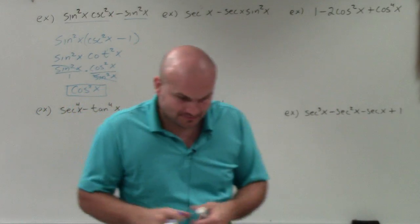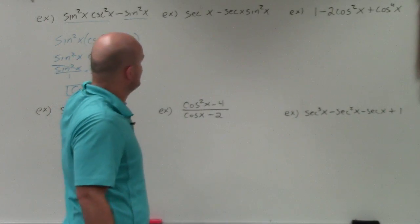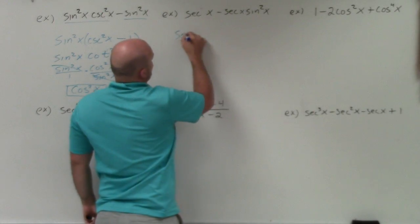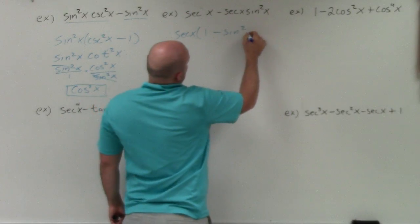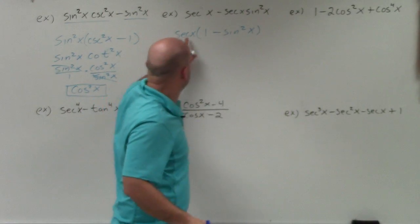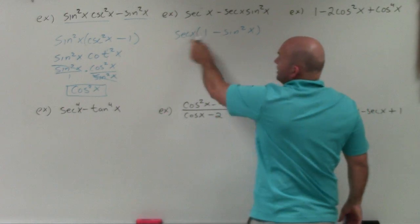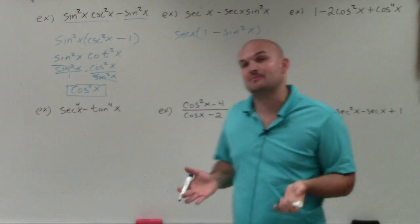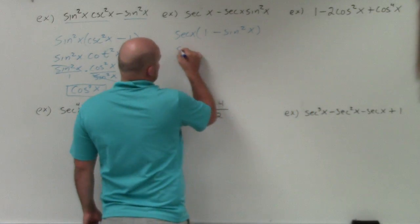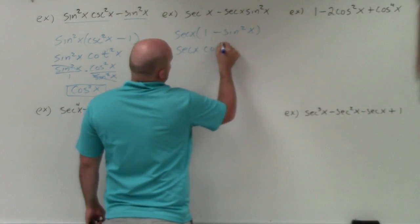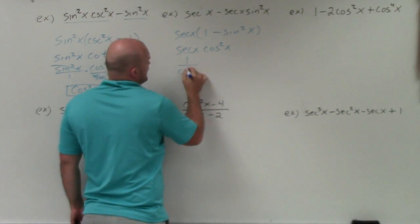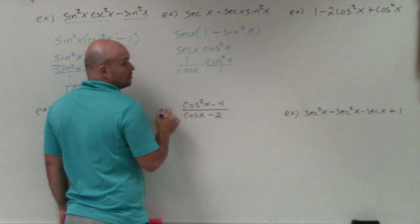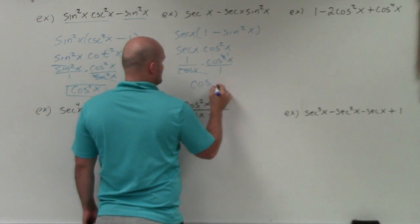The next example is basically the same thing, just using different trigonometric functions. You can see both terms share a secant, so I'm going to factor out a secant of x, leaving me with 1 minus sine squared of x. By my Pythagorean identities, 1 minus sine squared of x equals cosine squared. So I have secant of x times cosine squared of x, which is 1 over cosine times cosine squared of x over 1. Cosine divides into cosine squared, leaving cosine of x.